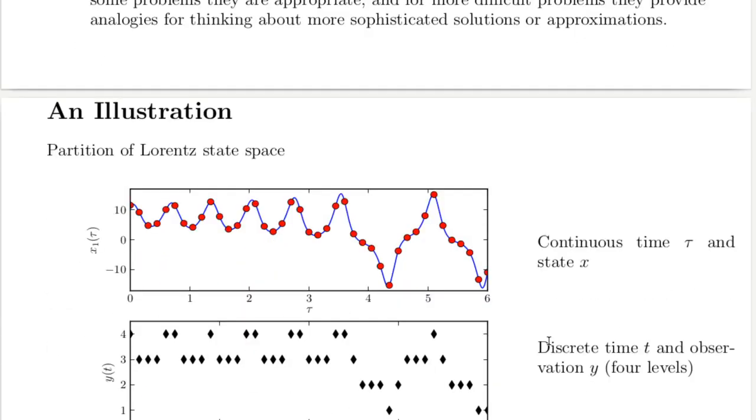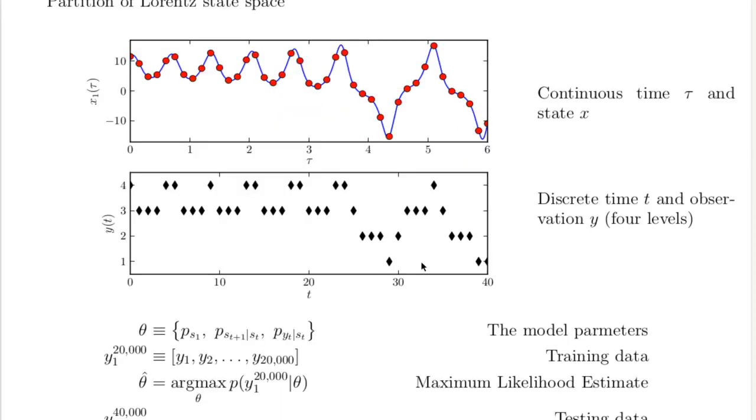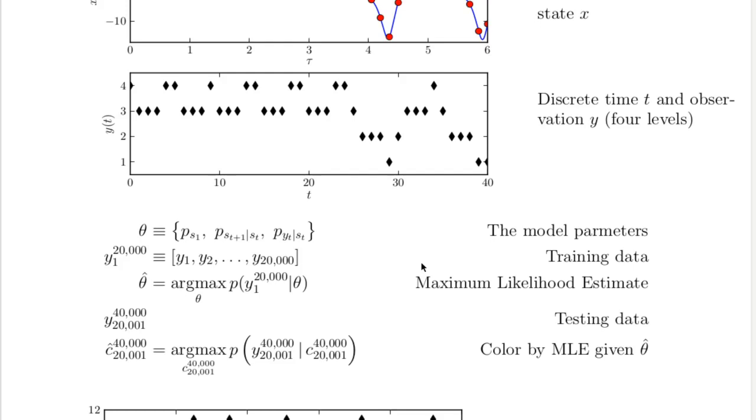Here's a toy example that I worked out years ago. I integrated the Lorenz system for a long time and discretized the x component in time and value. Here's a plot of a short piece of the x time series, and here's a plot of the corresponding discrete observations. Then I used the Baum-Welch algorithm, I'll describe that in a few minutes, to train a hidden Markov model. By train, I mean get a maximum likelihood estimate of these model parameters. I chose to use 12 states in the hidden Markov model to make a nice picture. If I'd used more states, the forecasts would have been a little bit more accurate.